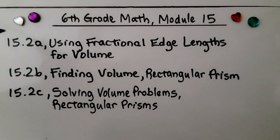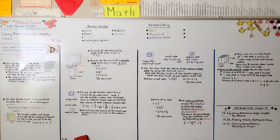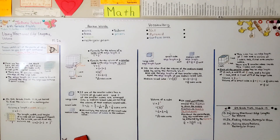We've finished the first part of this lesson. We're going to move on to the second part: finding the volume of a rectangular prism. Be careful when using fractions with exponents — if the entire fraction is involved, put parentheses around it to show that it's all affected by the exponent. Have a really nice day, and please join me for the second part of the lesson. Bye.